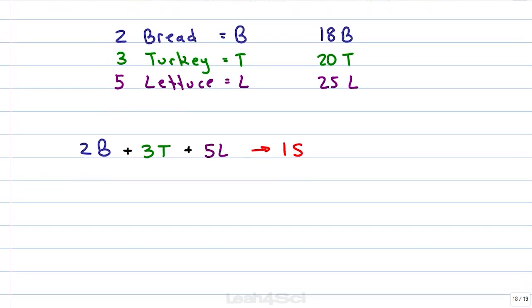And for this equation we have 2B reacts with 3T and 5L to give us 1S for 1 sandwich. With this balanced equation we now have a ratio of reactants as follows, 2B to 3T to 5L. For every 2 breads we use 3T and 5L to get 1 product, 1 sandwich.